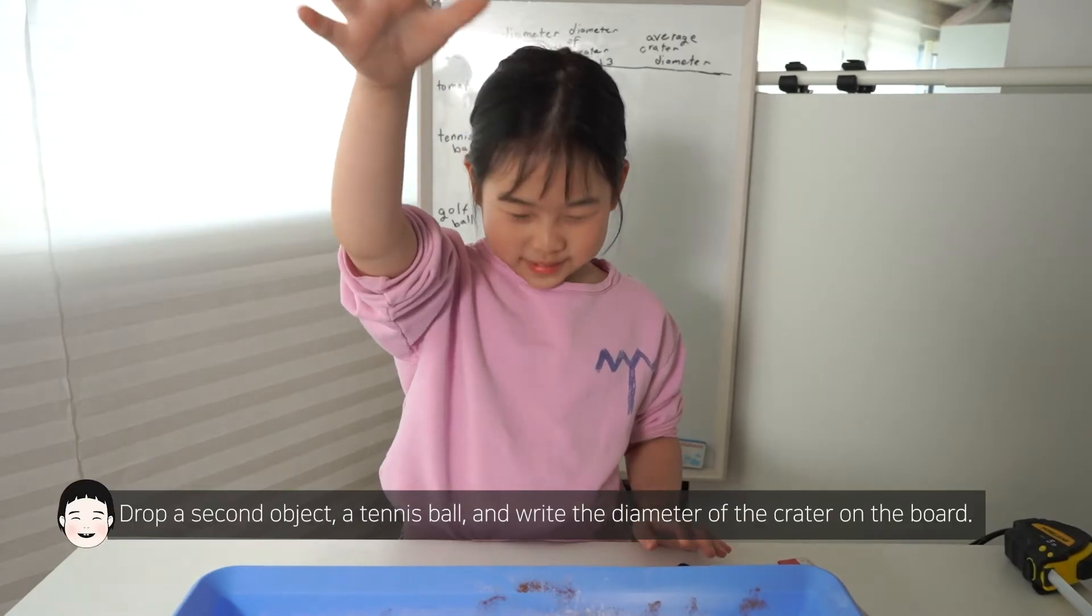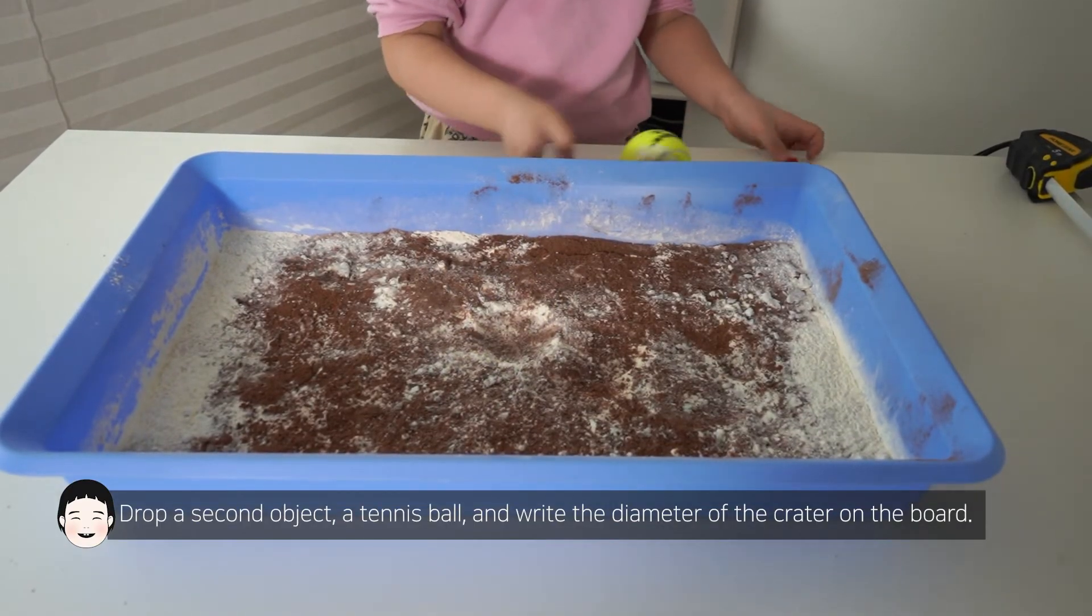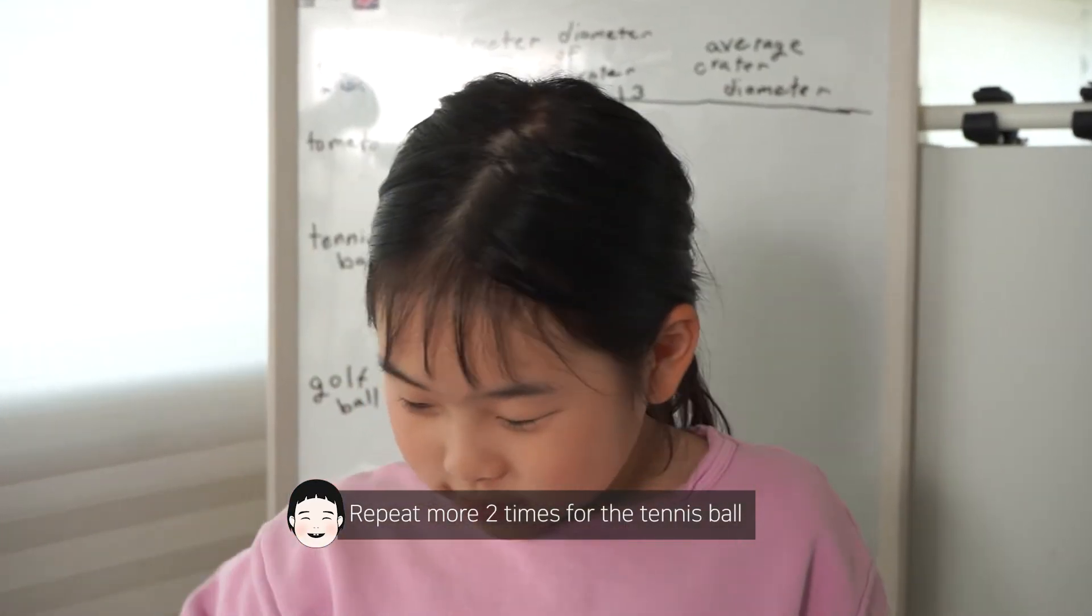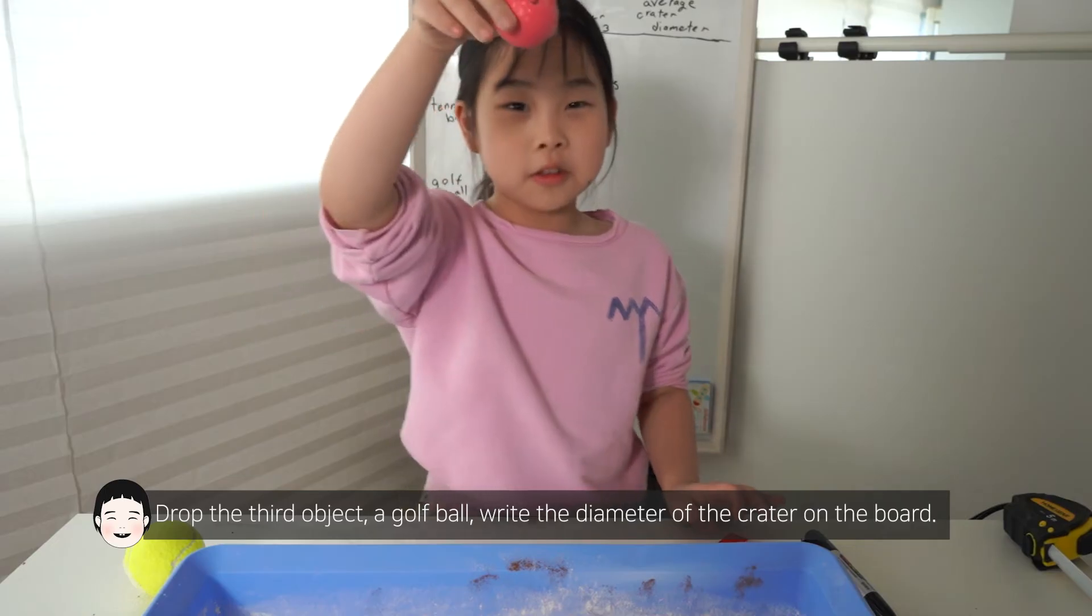Repeat two more times for the tennis ball. Drop the second object and write the diameter of the crater on the board. Repeat two more times for the tennis ball.